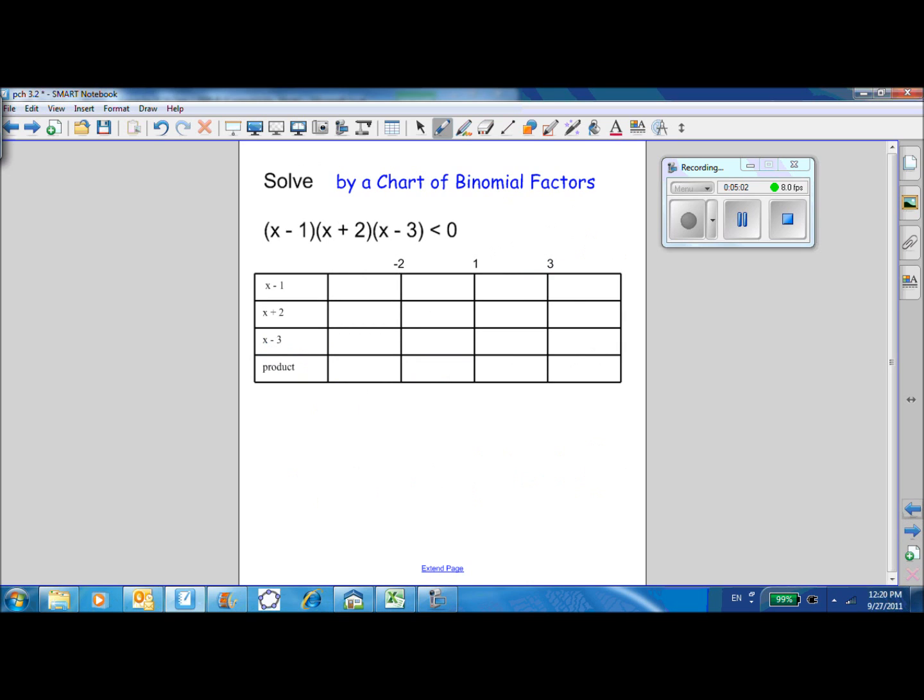Here's another technique. If you don't want to make the graph or if you don't know how to make the graph, like we're going to see with some rational functions before we get to graph them, you can analyze what's happened with the binomial factors. Each one of these binomial factors is a line, and we just do a sign chart.